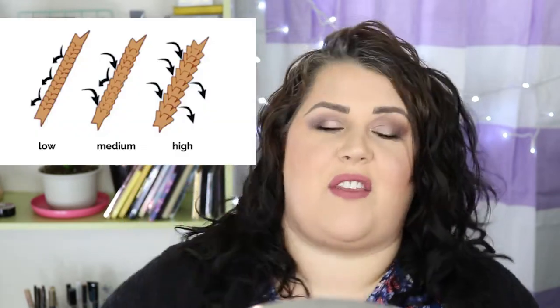I'll put a picture right here of the three different types. Starting with high porosity — that means that your hair cuticle is really open. So if you have high porosity hair, the cuticle has a lot of holes and gaps in it, which means it's really great at absorbing moisture. Moisture really gets in and gets underneath your cuticle, but it stays open so it's not great at retaining that moisture.